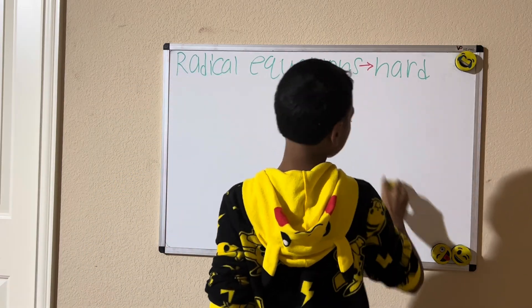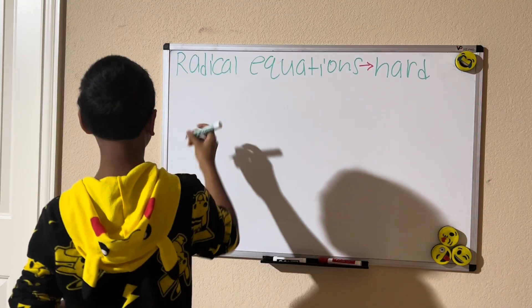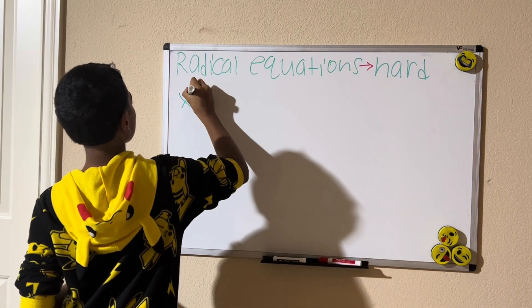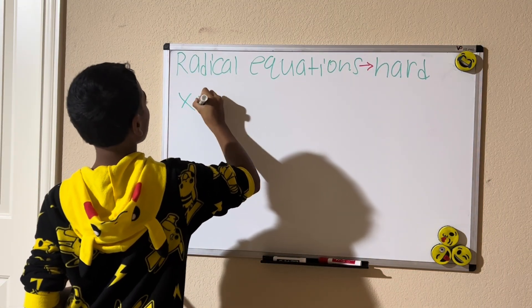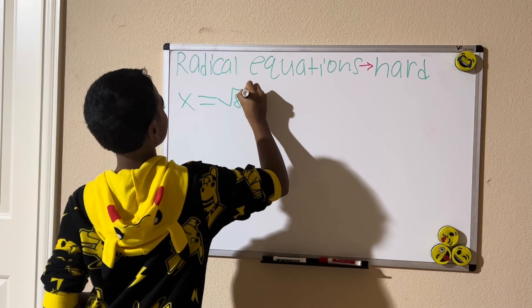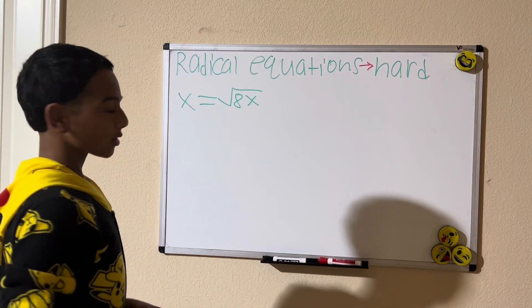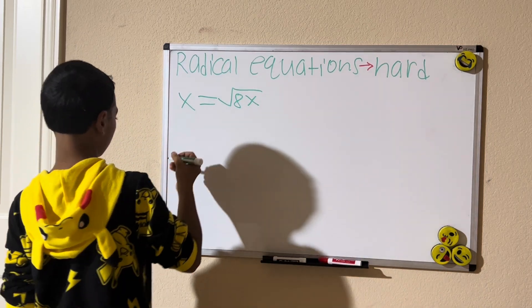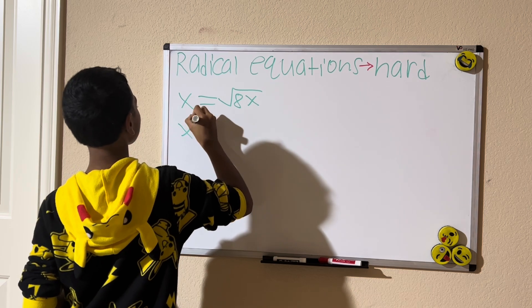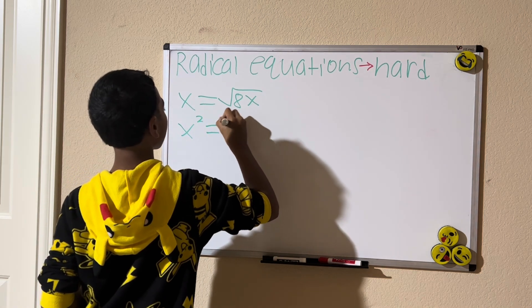For the next problem, we have x equals the square root of 8x. We're still squaring both sides, giving us x squared equals 8x.